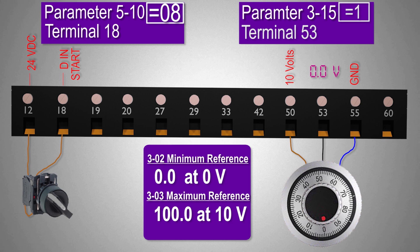For this example I set 0 Hertz speed at 0 volt analog input signal and 100 Hertz at 10 volts analog input signal.